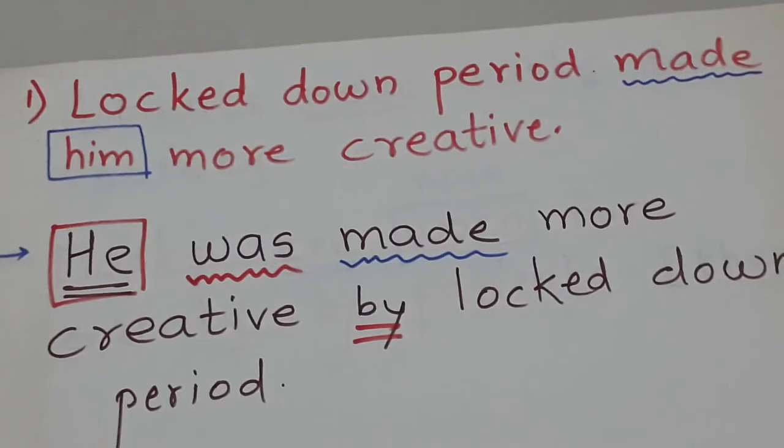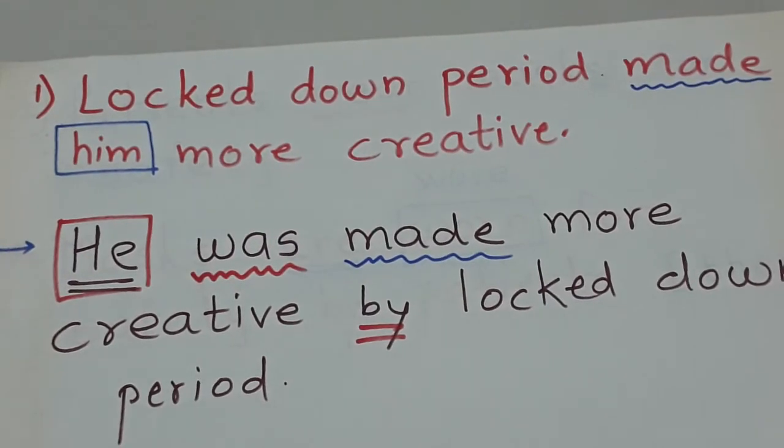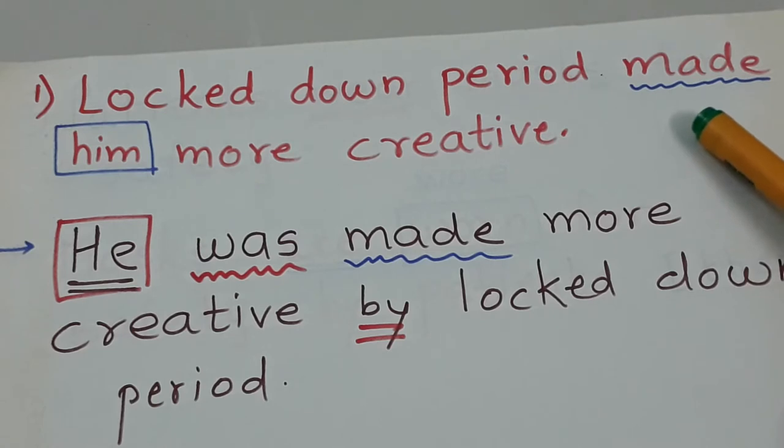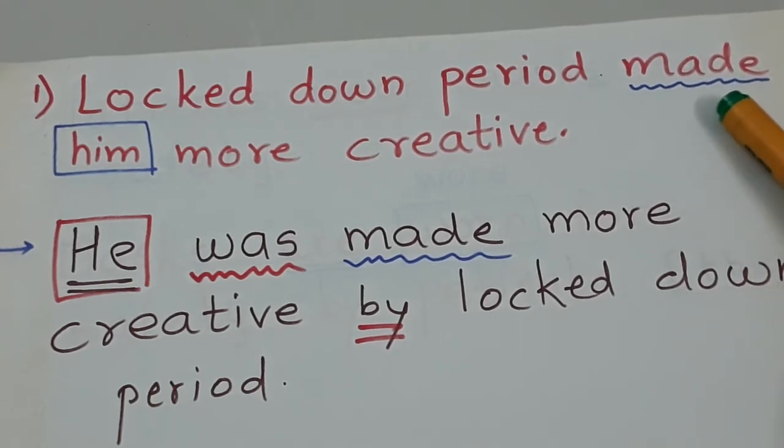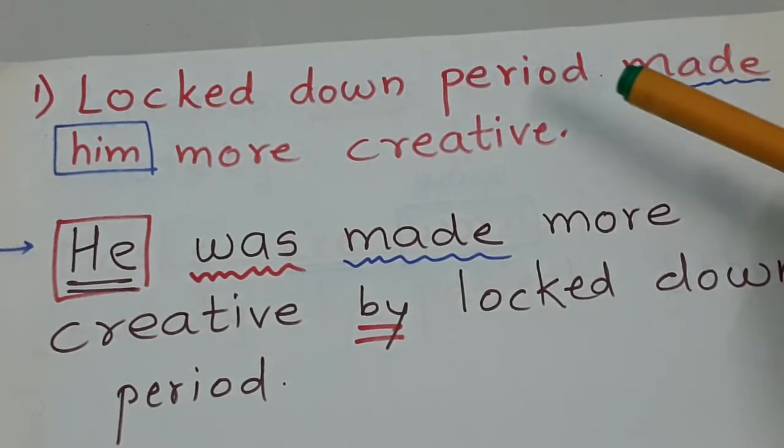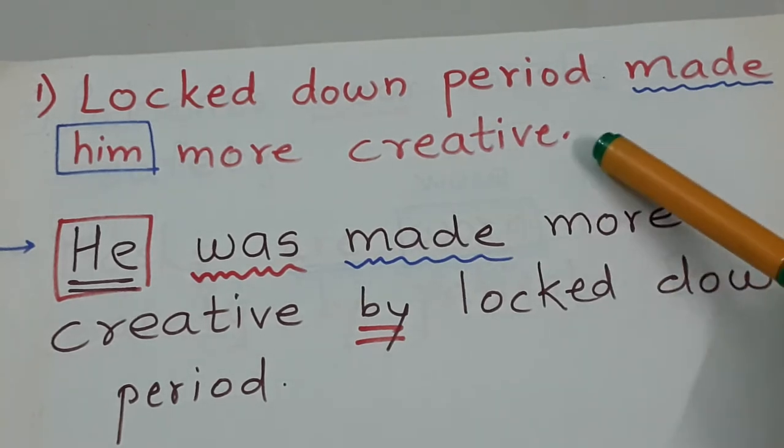Look at the sentence number first. Lockdown period made him more creative. During lockdown, it made him more creative. Now you must first recognize the verb in the sentence. I recognized made. This is the verb. Before that comes the subject: lockdown period. After made comes the object: him.